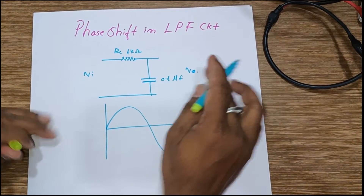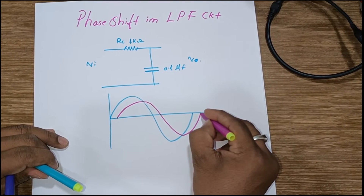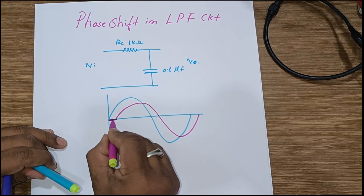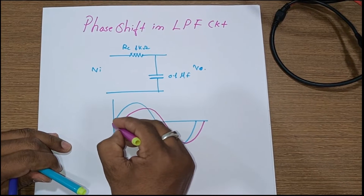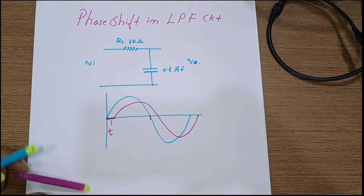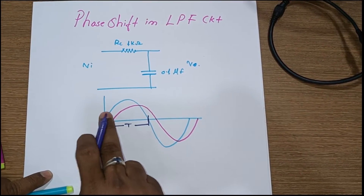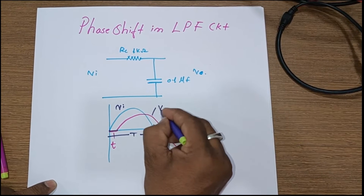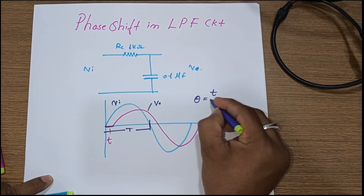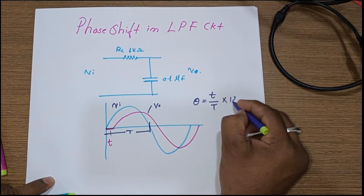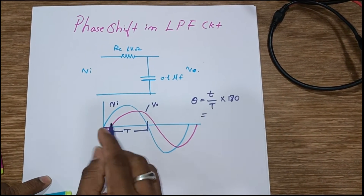We will get some output from the circuitry. If I show the output here with a different color, this will be the output. The difference between input and output is nothing but a phase shift. We can denote this by a small 't', and the full period as capital 'T'. So the phase shift theta equals small t upon capital T into 180, because we are calculating it for only one half cycle.